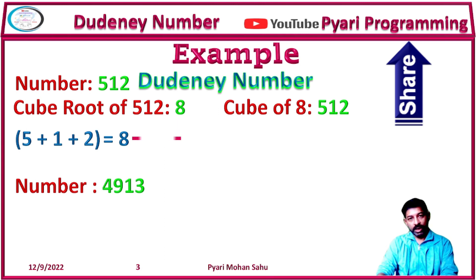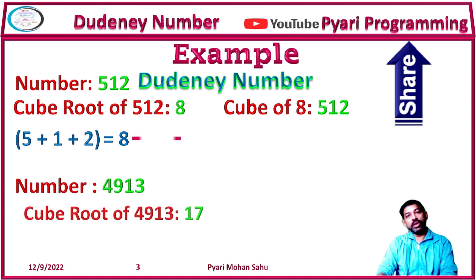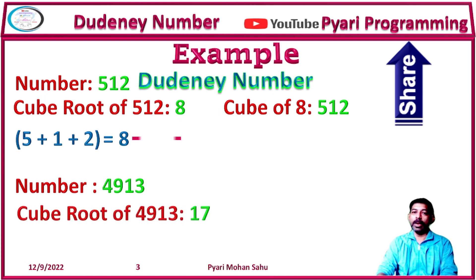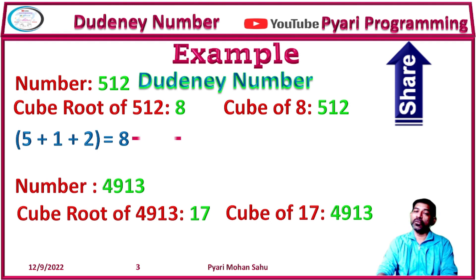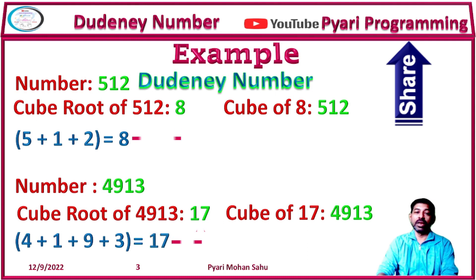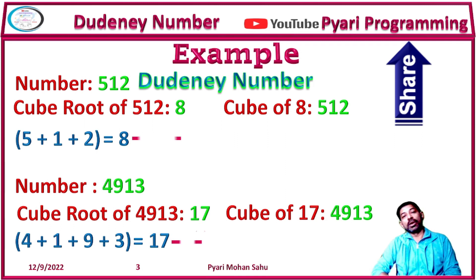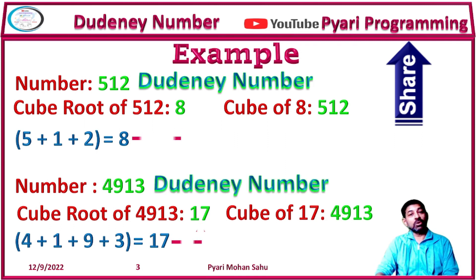One more example: the number is 4913. The cube root of 4913 is 17. The cube of 17 is 4913, so it is a perfect cube. Now we find the sum of the digits: 4 + 9 + 1 + 3 = 17, which equals the cube root of the number. So this is also a Dudani number.